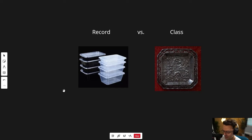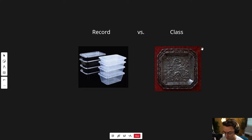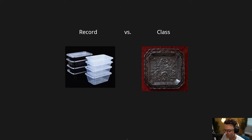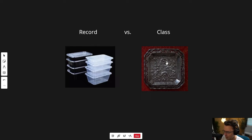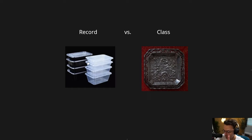A meal prep Tupperware container is meant to be used at most a couple of weeks and then you throw it out, versus 19th century silver which is very ceremonial, lasts a very long time, and is used quite extensively. The 19th century silver can be changed — you could take the dragons off, boil it down — silver is very malleable. But on the other hand, meal prep Tupperware containers are very unchangeable. If it cracks or gets too gross, you just throw it out. And there's beauty in that.